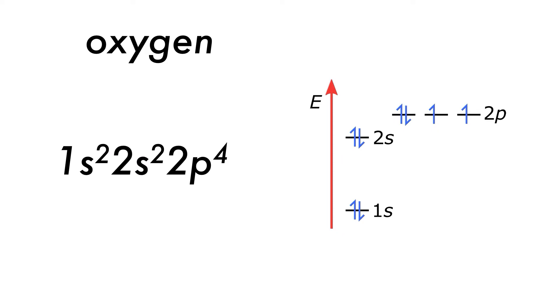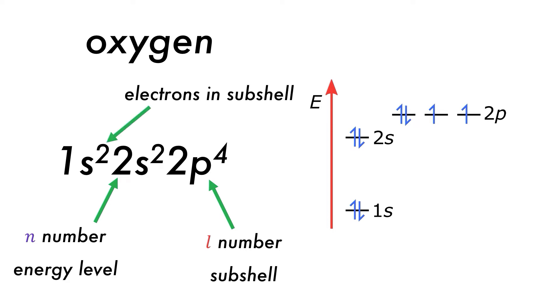That means that oxygen has an electronic configuration of 1s2 2s2 2p4. The number in front of the letter is the n quantum number or energy level of the orbital. The letter comes from the subshell or orbital type and corresponds to the l quantum number, and the superscript number is the number of electrons in that subshell.